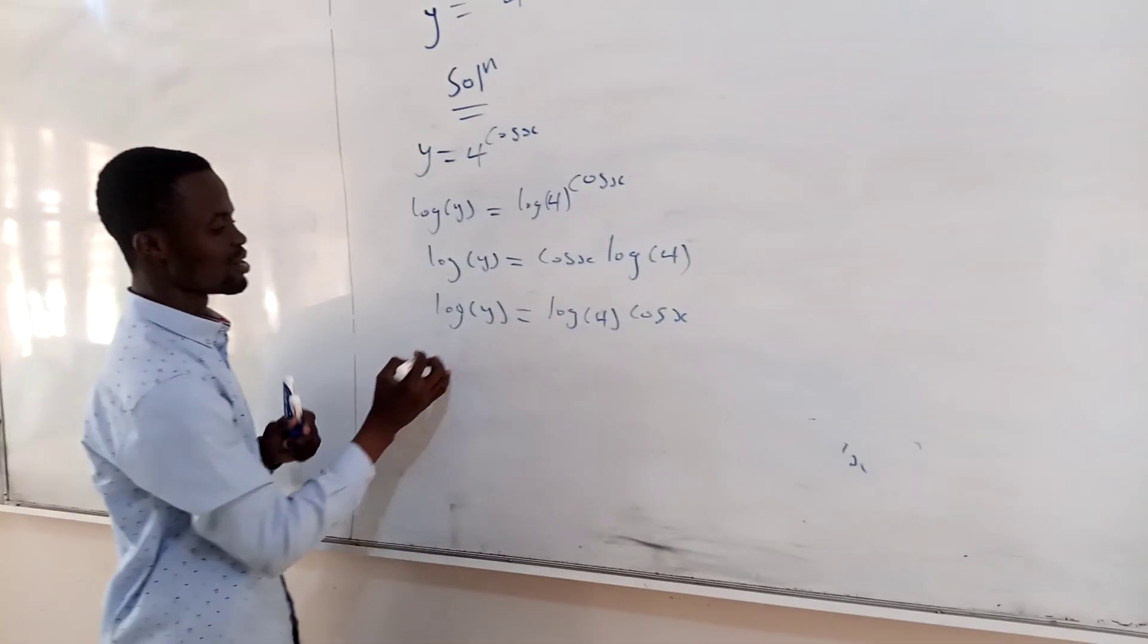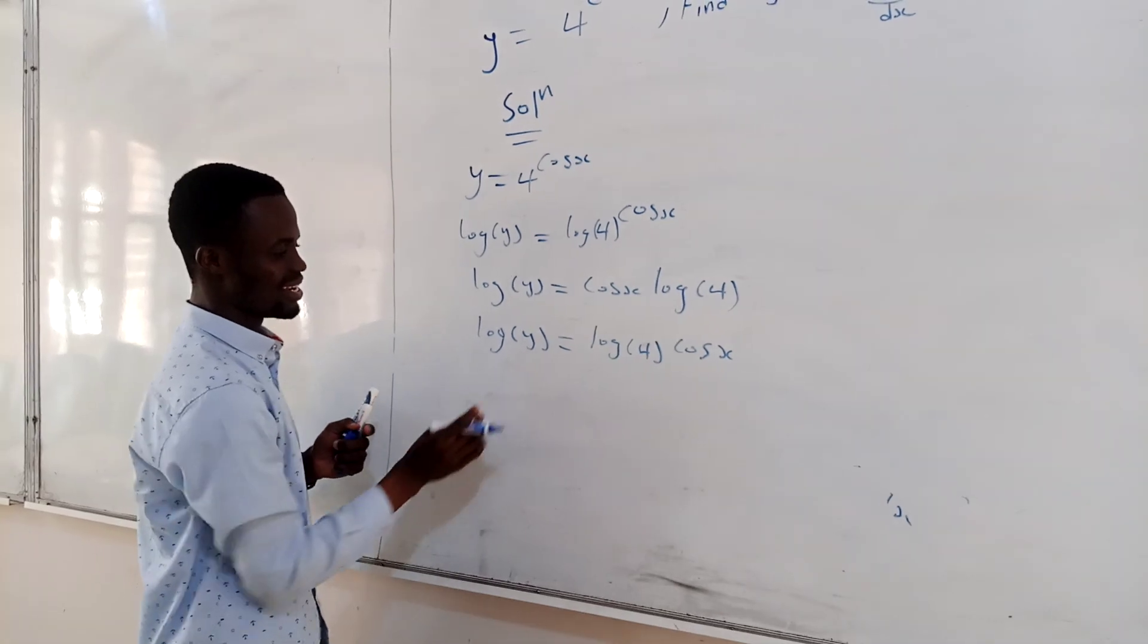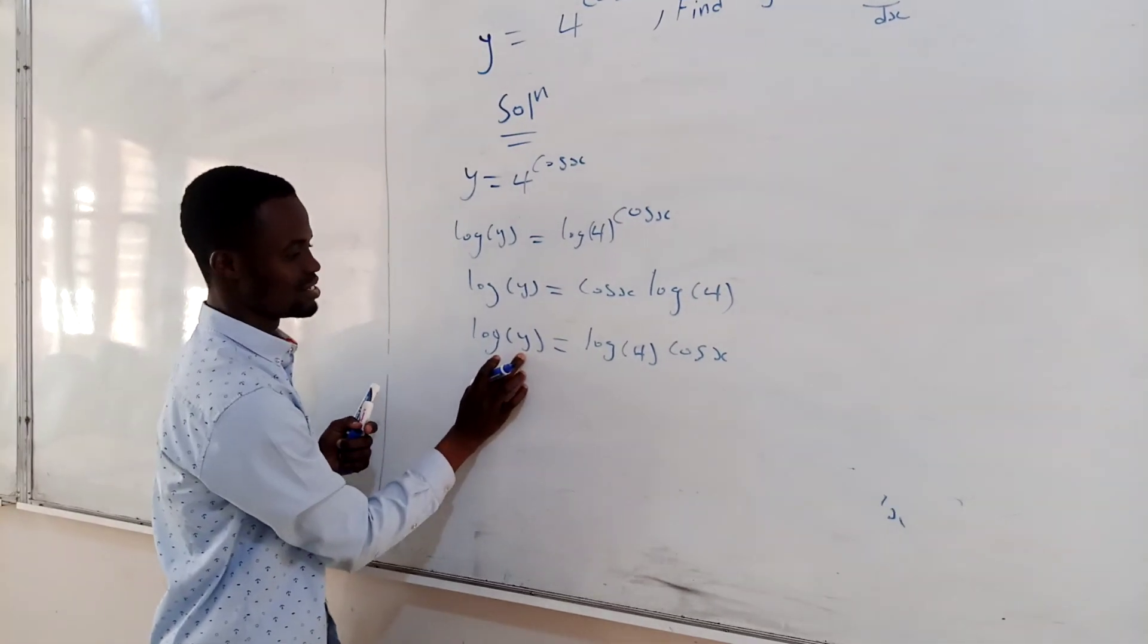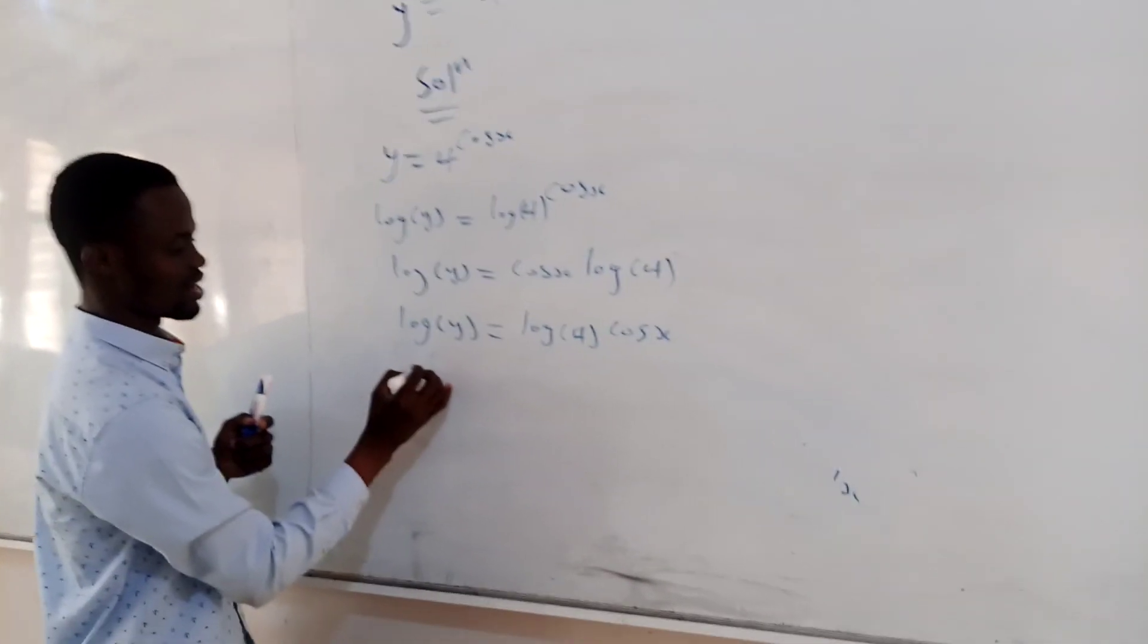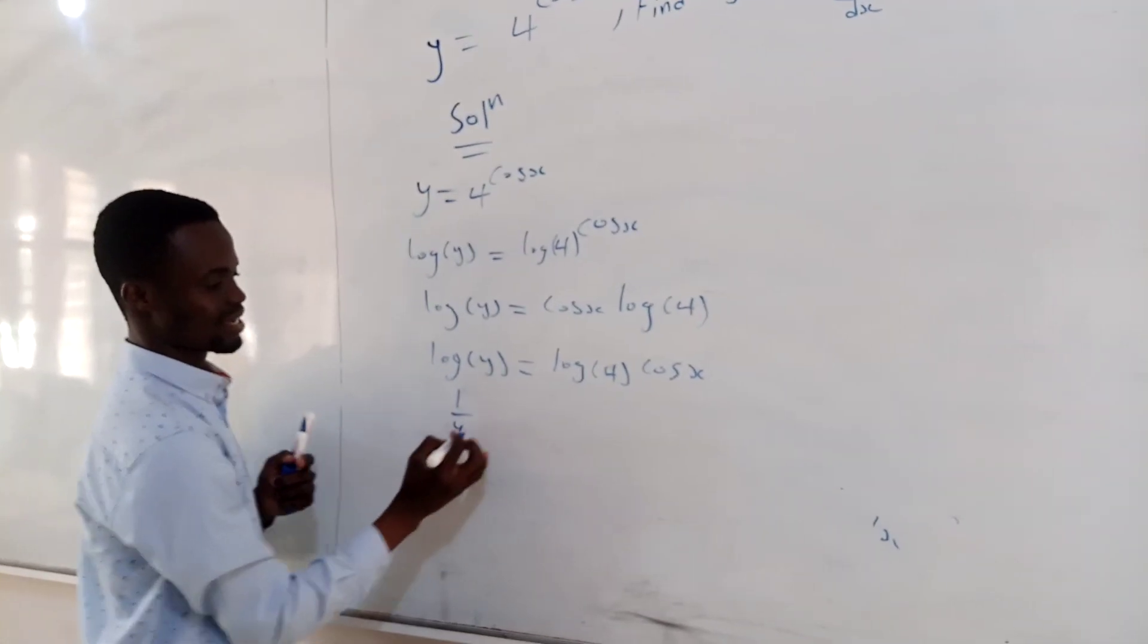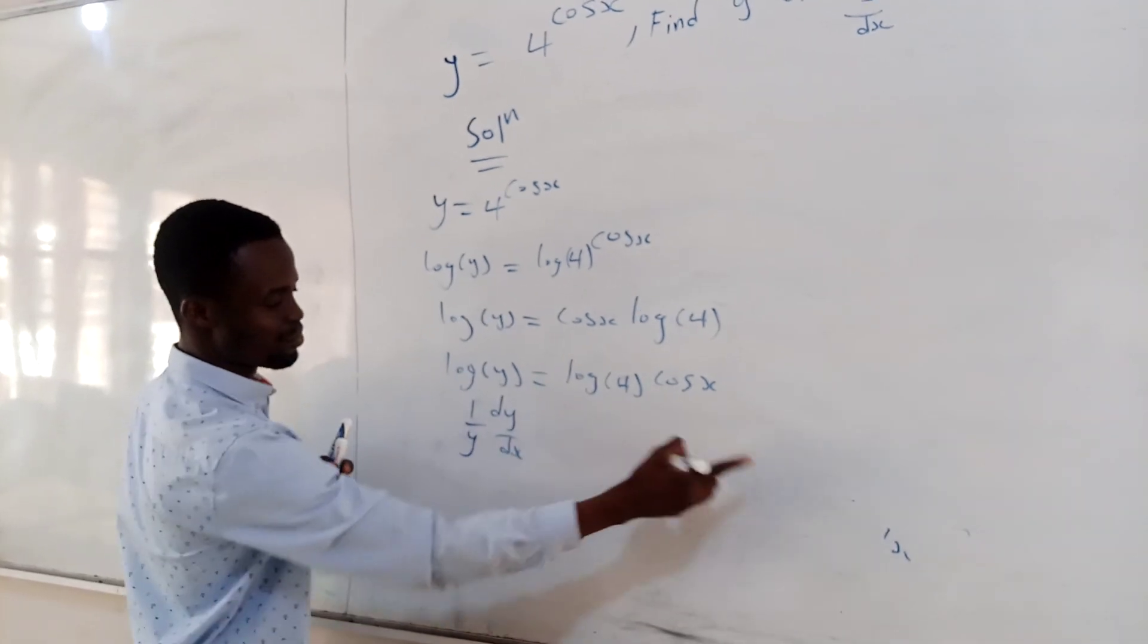So here, if you differentiate log y, the idea is you differentiate the one in the bracket, you get 1, then you divide it by the one in the bracket. So the differentiation for this one is 1 over y. Then because of the y, you attach dy dx, the example we did.